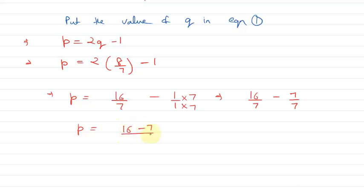This gives us 16 upon 7 minus 1, which is 16 minus 7 upon 7. So p equals 9 upon 7.